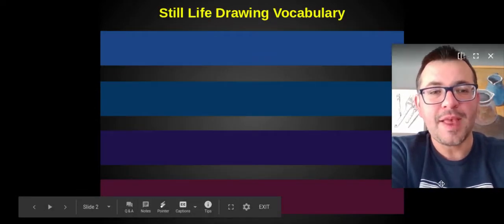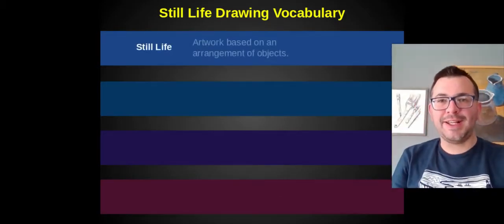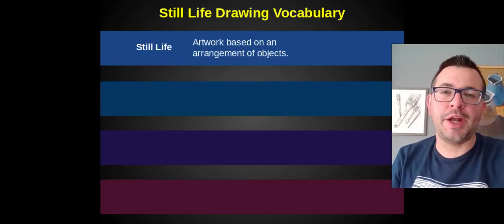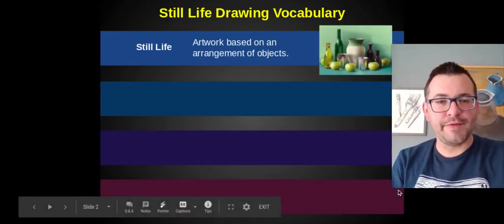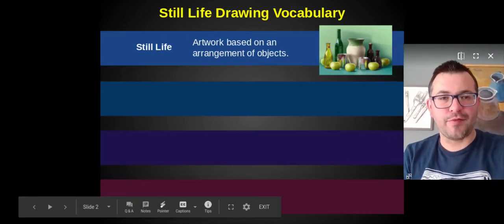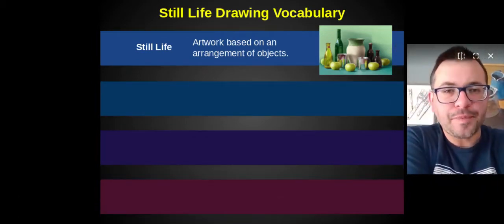So let's talk about the first one. The first one is a still life and that is an artwork based on an arrangement of objects. We have seen still lives before and we have talked about them before in our class. So here's one example of a still life.